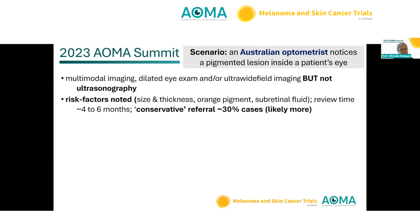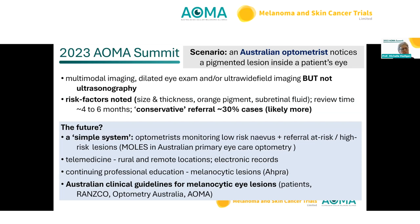Going back to the patient scenario: what does the Australian optometrist do? They'll be doing multimodal imaging, a dilated eye exam or ultra-wide-field imaging but not ultrasound. They will identify risk factors, but probably not use the TFSOM DIMM system. They are likely to refer at least 30% of cases. The future question: could we adopt the MOLES system as a simpler system for optometrists to monitor low-risk lesions in the community, with guidance for when to refer low-risk, high-risk, and probable melanomas?